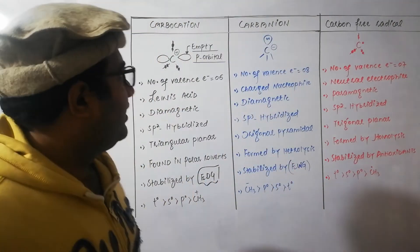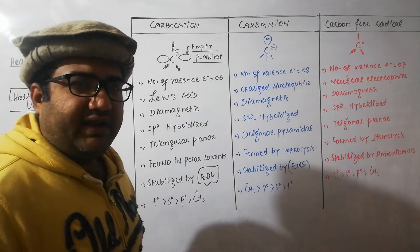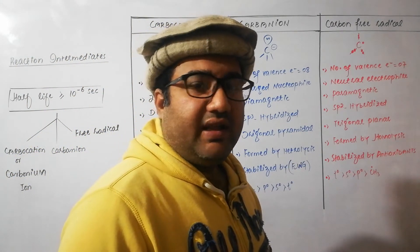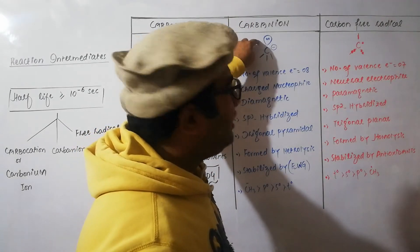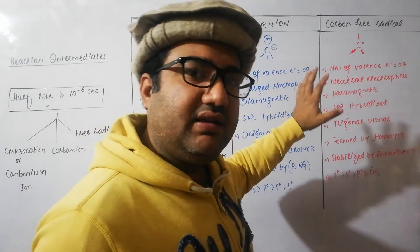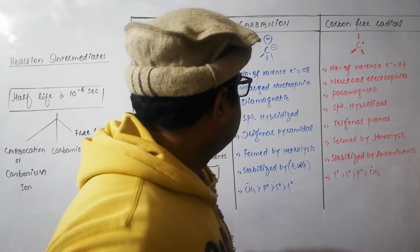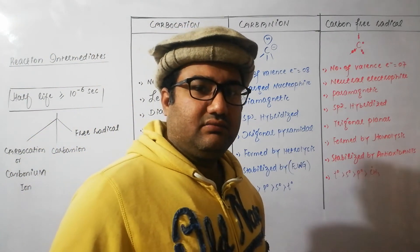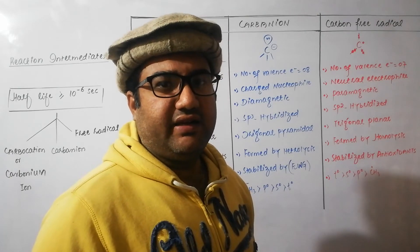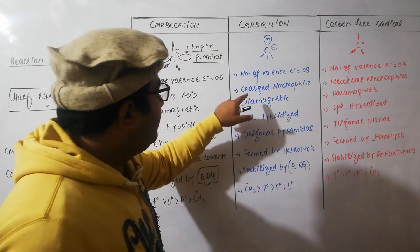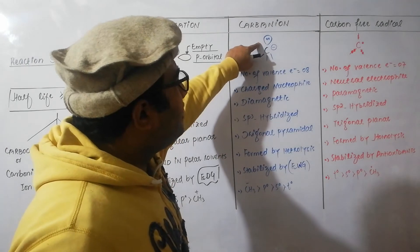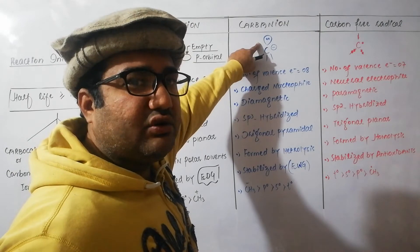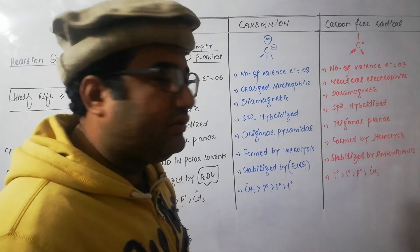Now, what is a carbanion? A carbanion is a carbon having eight electrons in its valence shell in the form of three bond pairs and one lone pair, and it also carries a negative charge. The number of electrons is eight, so its octet is complete. As it carries a negative charge as well as a lone pair of electrons, it is electron rich and will act as a good nucleophile — a charged nucleophile.